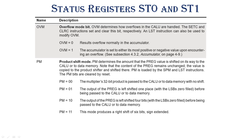With PM equal to 00, the product is passed to the CILU or to data memory with no shift. With PM equal to 01, the output of PREG is left shifted one place before being passed to the CILU or data memory. With PM equal to 10, the output of PREG is left shifted 4 bits before being passed to the CILU. With PM equal to 11, it produces a right shift of 6 bits, sign extended.